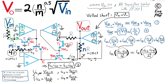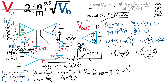Now substituting all IC expressions into equation 3: (Vin/R) · (4/MR) = (Vout/R) · (Vout/NR). The R values cancel from all sides. Rearranging, we get Vout² = (4N/M) · Vin.